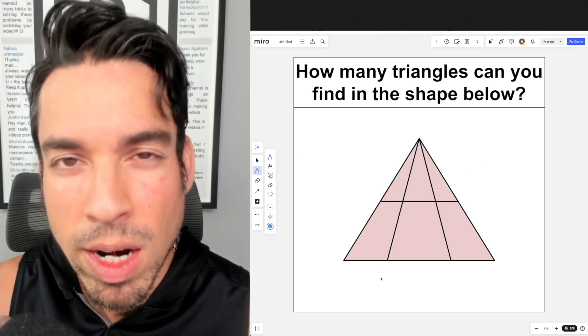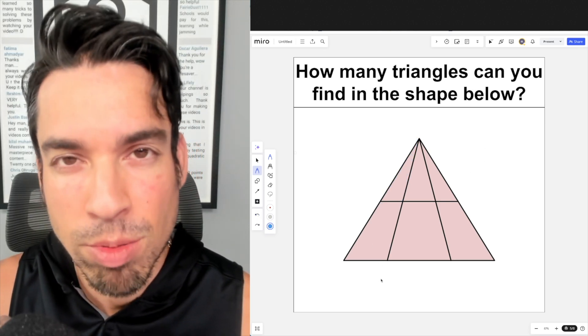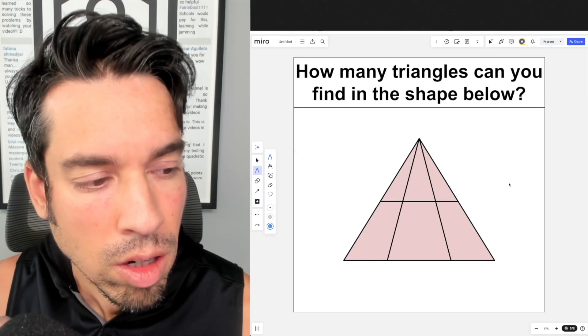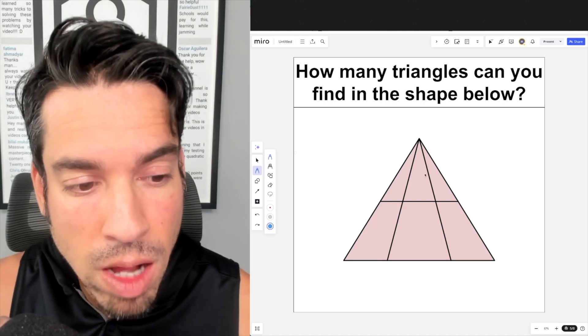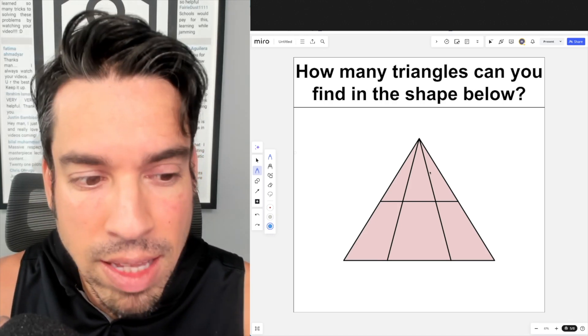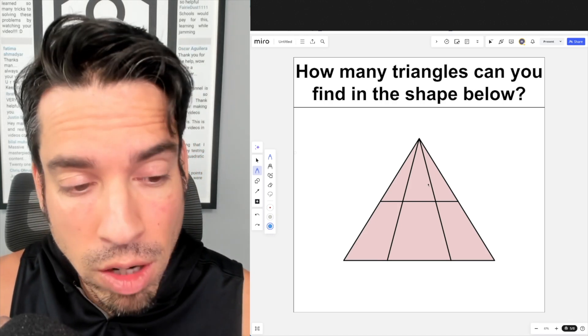When you're ready, hit play and I'll give you the explanation. For a question like this, it's very important to follow a strategic plan so you won't miss any triangles in this picture. I'm going to start with the smallest first. I see one here, I see another one here...